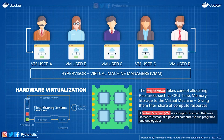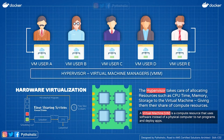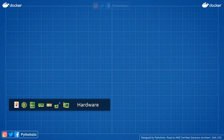The hypervisor takes care of allocating resources such as CPU time, memory, and storage to the virtual machines, giving them their share of computing resources. A virtual machine is a compute resource that uses software instead of physical hardware to run programs and deploy applications. Time-sharing isn't used as much anymore since we moved on to real-time multi-processing systems and then to general-purpose operating systems like Windows — and that is what gave birth to the other type of hypervisor.